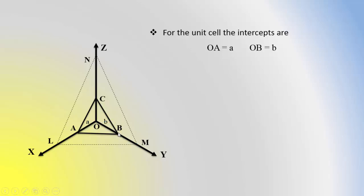Then on the Y axis, it intercepts at the point B. Therefore, OB equals B. And for the Z axis, it intercepts at the point C. Therefore, the distance OC or intercept OC is equal to C.